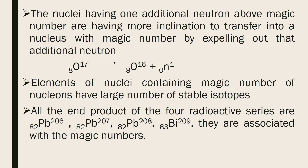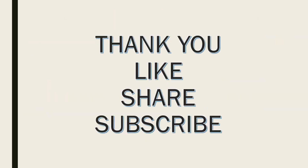Magic numbers are closely associated with nuclear shells — they represent closed shells of the nucleus. As a result, nuclei having magic numbers are highly stable, which is proved by experimental evidence. This concludes our discussion on the nuclear shell model.